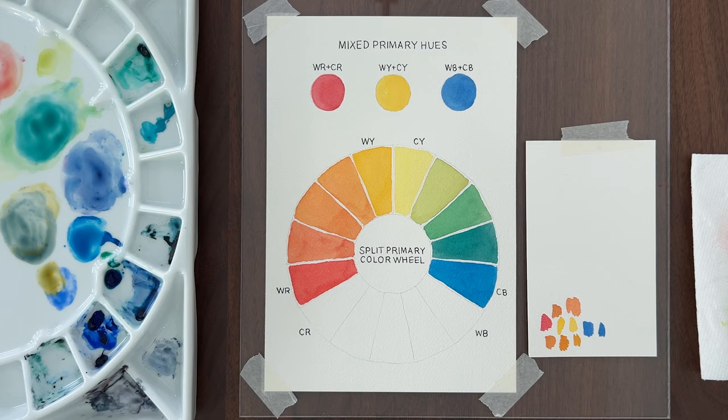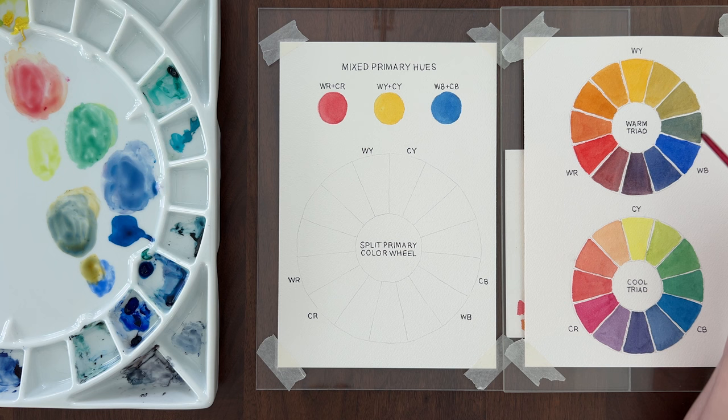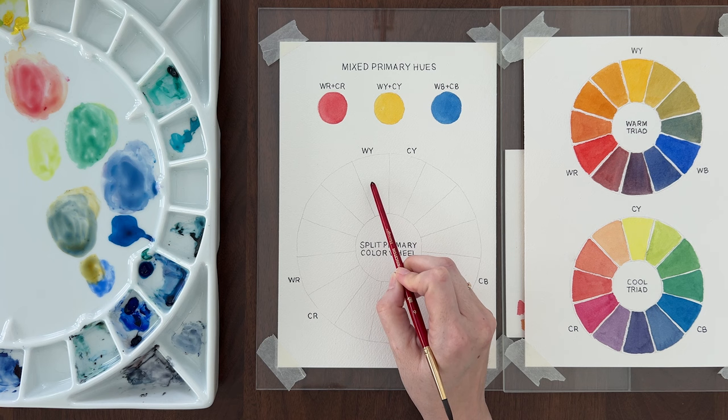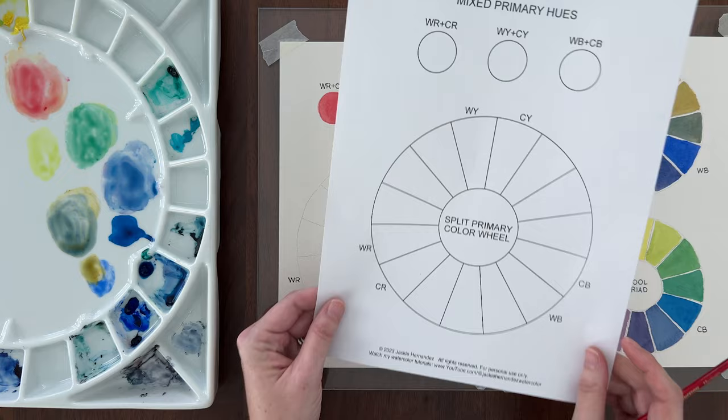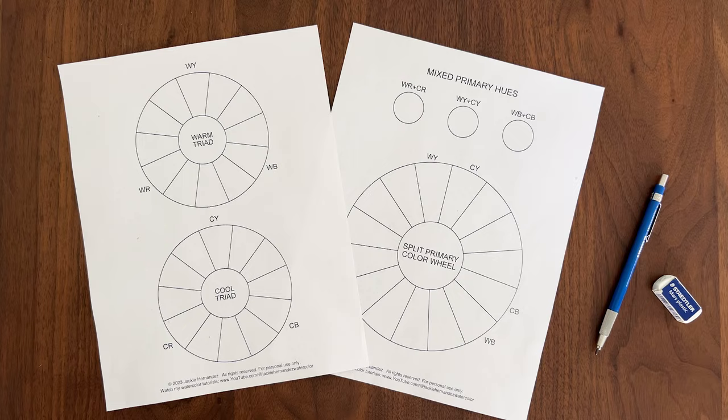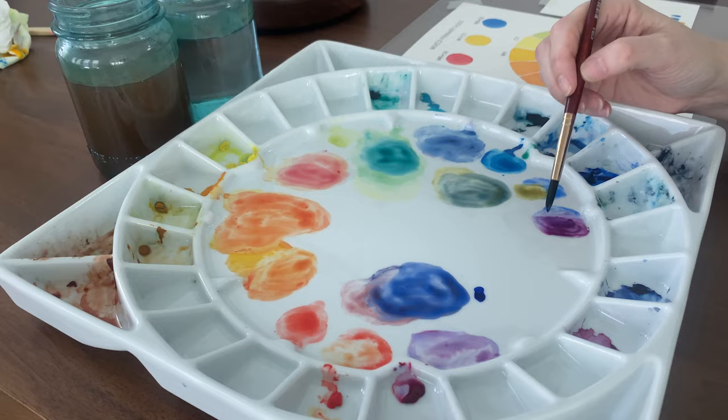Now, a typical color wheel has 12 sections. A split primary has 15 sections to accommodate two versions of each primary color. If you don't want to mess around with a compass and a protractor, you can download a 15 section color wheel in the video description. It's on page two of the template that I made for you.